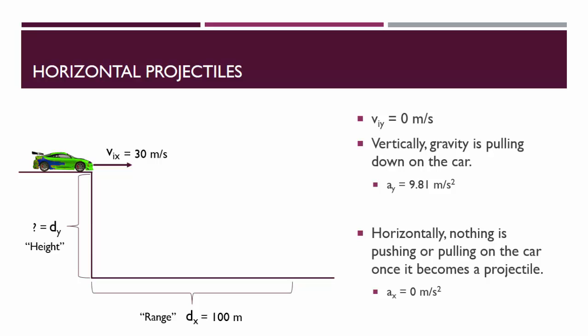As you can see, there's a lot of information here. We have all of the variables we're used to from uniform accelerated motion problems, but now they're duplicated. We have horizontal values for them, and we have vertical values for them.